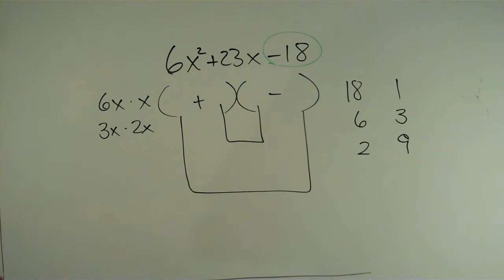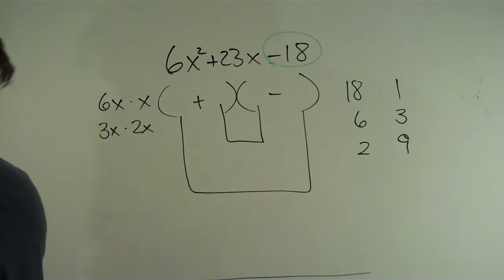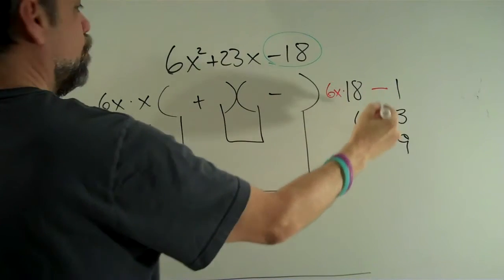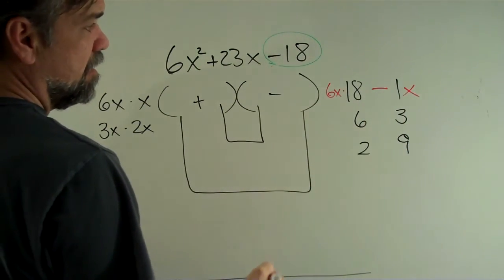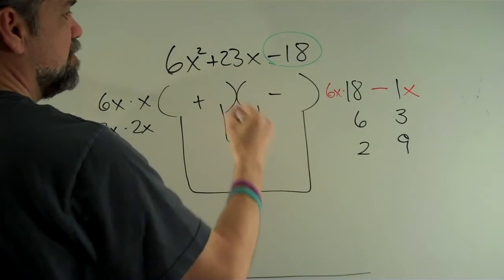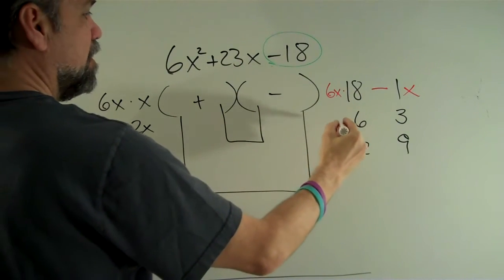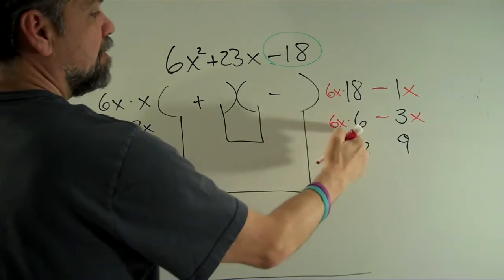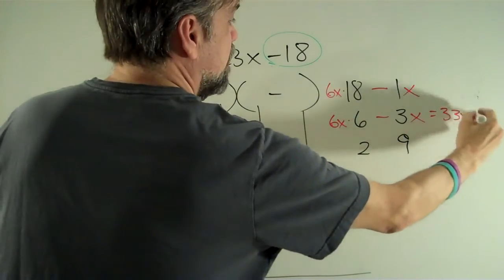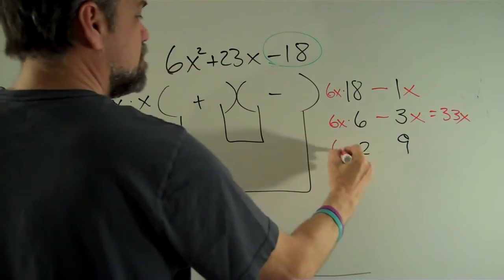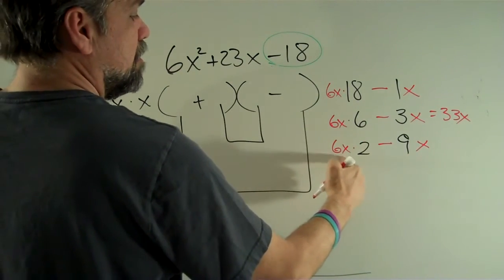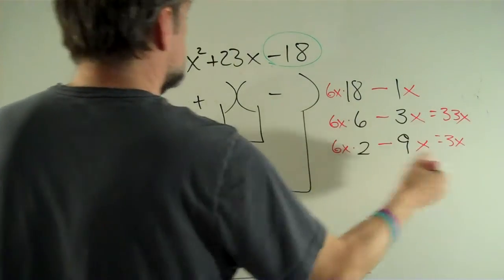Okay, so let's just start looking at some possible combinations. If I take 6x times 18 minus 1 times x, I get, I'm not sure what that is, but it's way too big to be 23, so that's not going to work. If I take 6x times 6 minus 3 times x, I'm going to get 36 minus 3, which is 33x. That's also wrong. If I take 6x times 2 minus 9 times x, I'm going to get 12 minus 9 is 3x. That's actually too small.